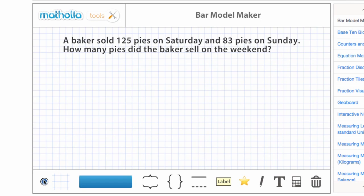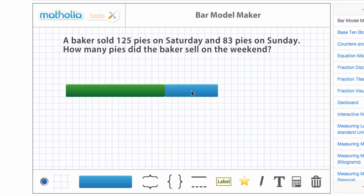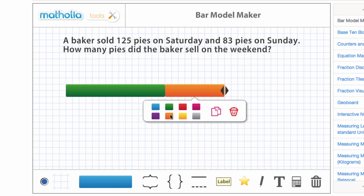In this word problem, we know the two parts and need to find the whole. We can use bars to represent the parts and present the bar model like this.